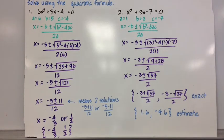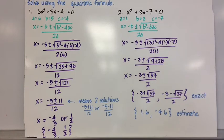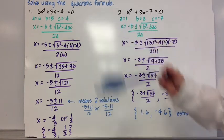So I identify a, which is 6, b, which is 5, and c, which is negative 4. I remind myself of what the quadratic formula is. x equals negative b plus or minus the square root of b squared minus 4ac all over 2a.